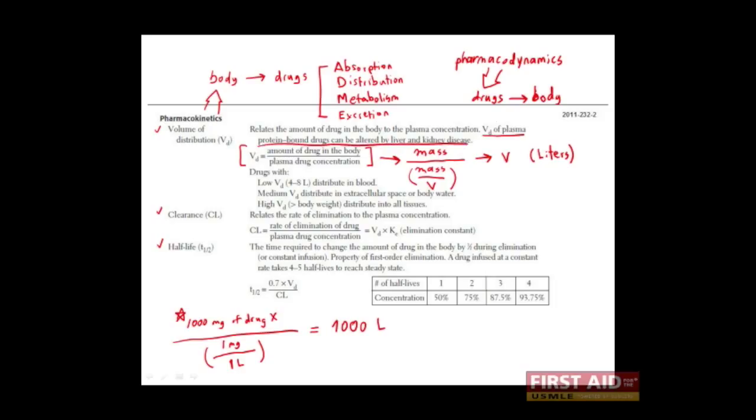Finally, it's important to note that the volume of distribution of plasma protein-bound drugs can be altered by liver and kidney disease. In order for some drugs to be carried in the plasma, they must be bound to some proteins. They often must be bound by plasma proteins such as albumin. Albumin, of course, is produced by the liver.